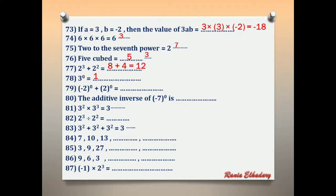Number 79: (negative 2) power 0 plus 2 power 0. (Negative 2) power 0 equals 1. Plus 2 power 0 equals 1. So 1 plus 1 equals 2.